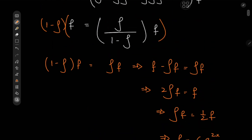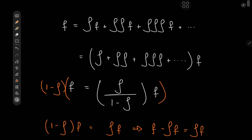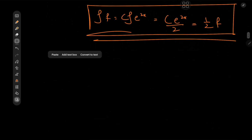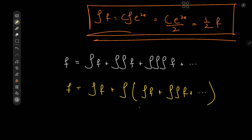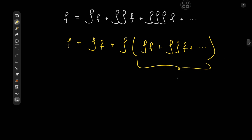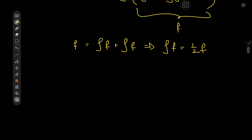But is there another way to conclude this exact same solution? There is. Let's break the equation down: f equals the integral of f plus the integral of (the integral of f plus the double integral of f and so on). But wait — isn't this thing in parentheses exactly what f is defined to be? So we have f equals the integral of f plus f, which implies the integral of f equals 1/2 of f, and this leads to the same solution: f equals c times e to the 2x.